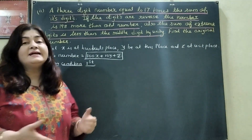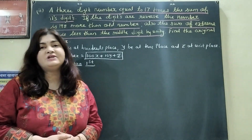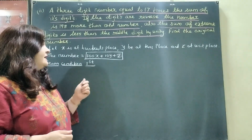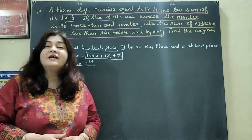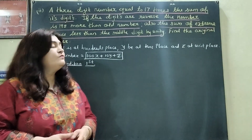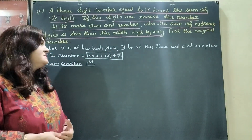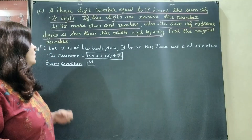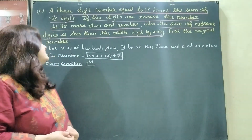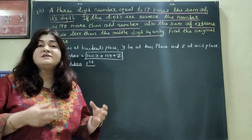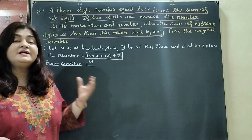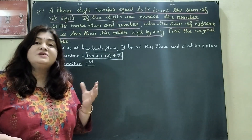Let us take the second problem. In this sum there is a 3-digit number, so we take 3 variables: at the 100th place we take x, at the 10th place we take y, and at the units place we take z. So the number is 100x plus 10y plus z. The first condition is that the 3-digit number equals 17 times the sum of its digits, meaning 17 times (x plus y plus z).